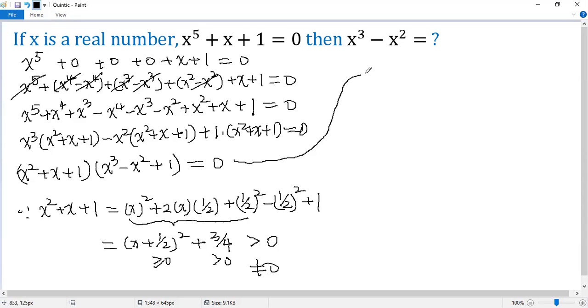So then from this condition, we see the second factor must be 0 because this one is 0. So we get x cubed minus x squared plus 1 equals 0. Subtract 1 from both sides. So we get x cubed minus x squared equals negative 1. That is the answer we are seeking for, negative 1.